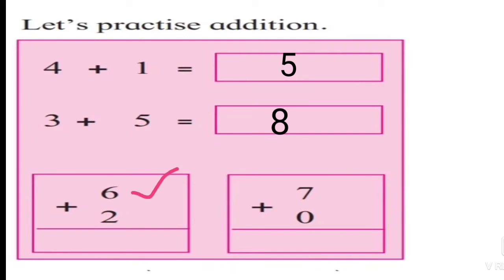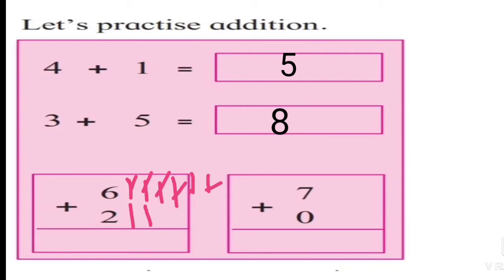This is six and we have to add two. We will draw six lines: one, two, three, four, five, six. And the next number is two — draw two more lines. Count all lines together: one, two, three, four, five, six, seven, eight. Six plus two is equal to eight.